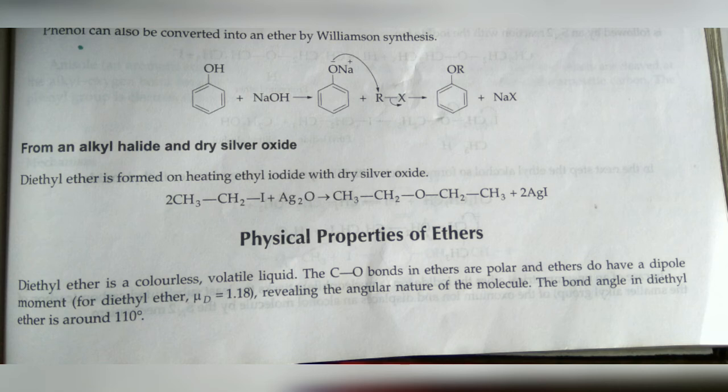Physical properties of ethers: diethyl ether is a colorless volatile liquid. The C-O bonds in the ether are polar and ethers do have a dipole moment. Oxygen is highly electronegative, so carbon becomes electropositive. Due to the angular nature of the molecule — carbon bonded to oxygen bonded to another carbon — the angle is formed because oxygen has two lone pairs of electrons.